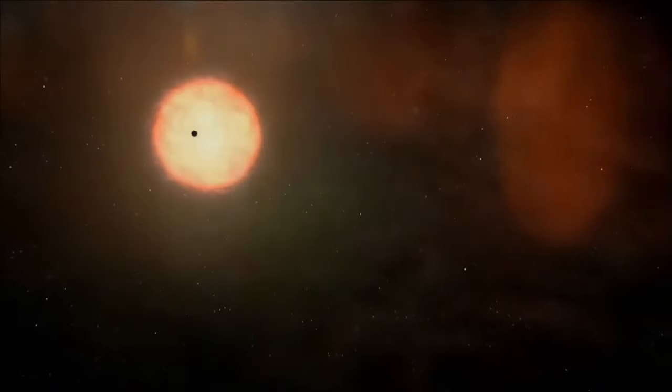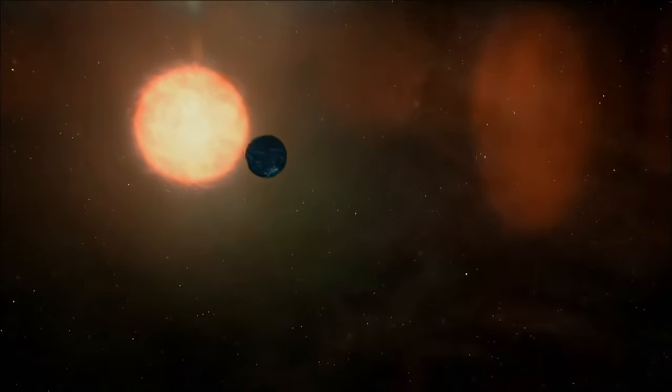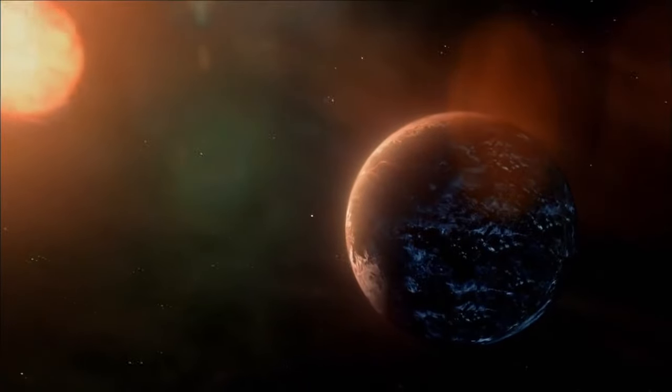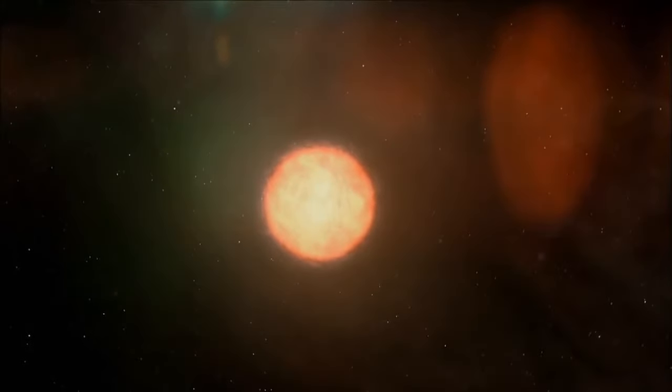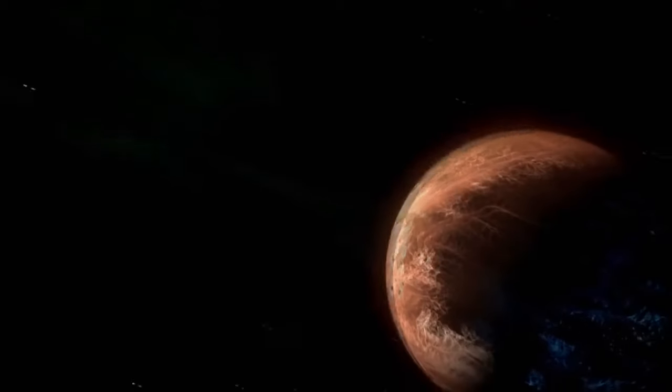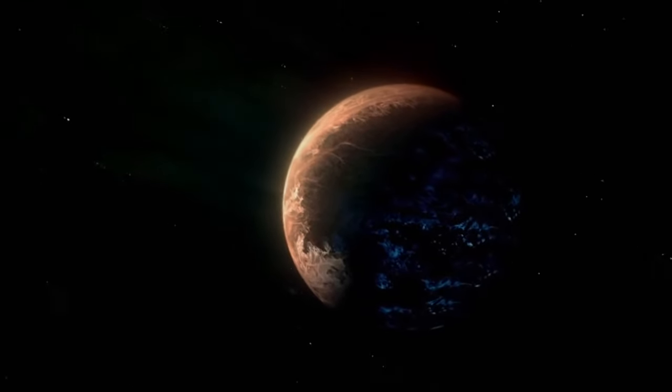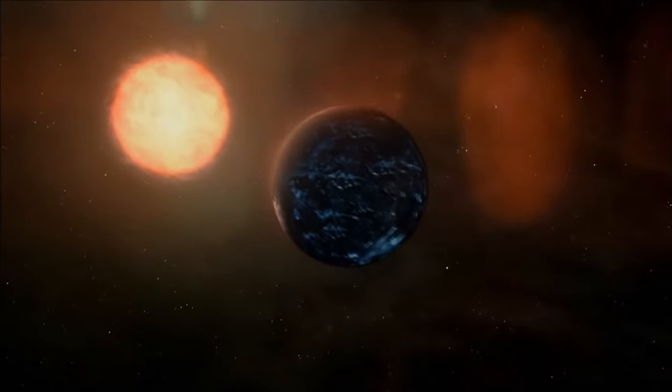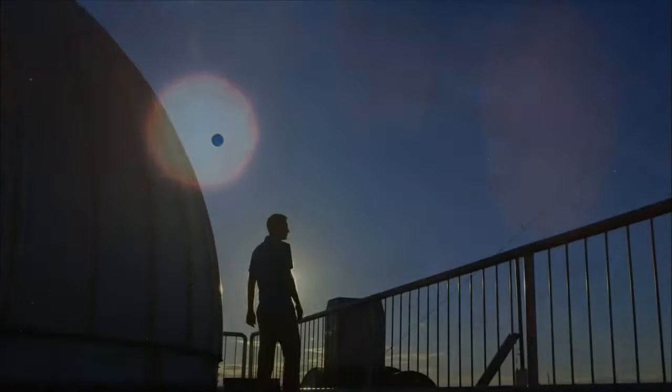While scientists can speculate about life on Kepler-22b, for now there is no way to confirm that there is water on its surface. Fortunately, it isn't the only potential life-supporting planet Kepler has found. On February 28, 2012, nearly three years after launch, NASA announced over 1,000 potential new planets. One of these was orbiting the star KOI 2626. This potential planet is about one and a half times the size of Earth, small enough that it's likely to be rocky. But there's a problem: it doesn't orbit a star like our sun. It orbits a very different kind of star.